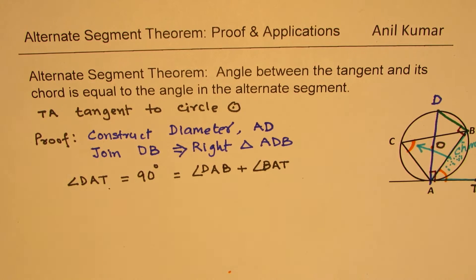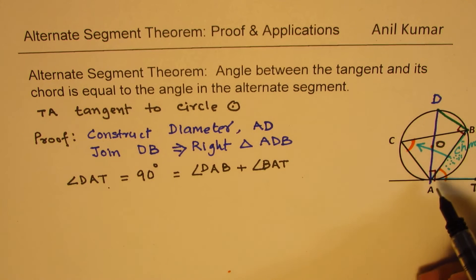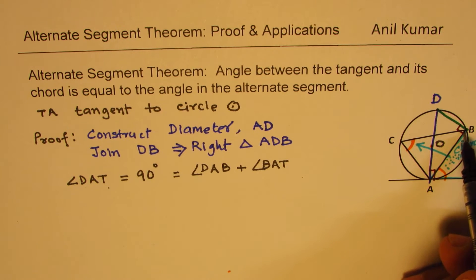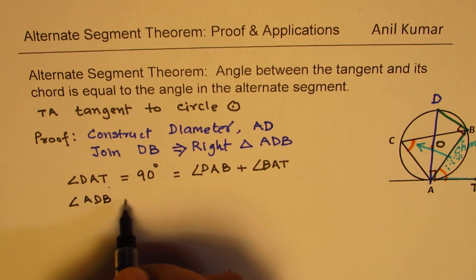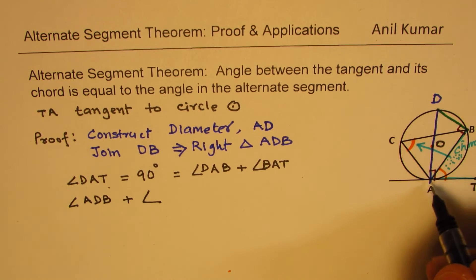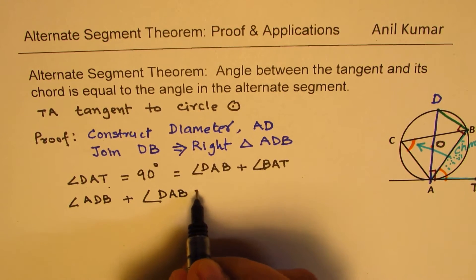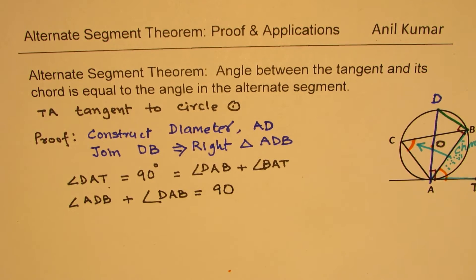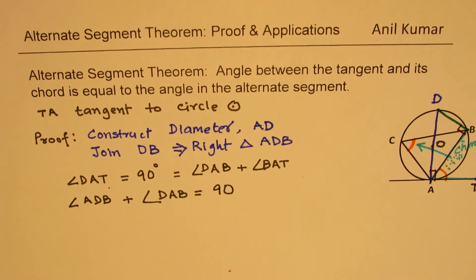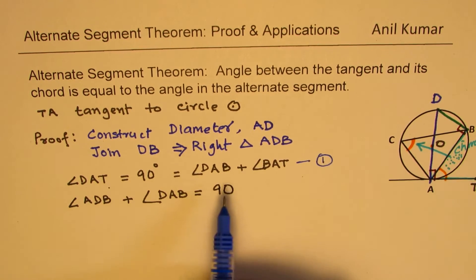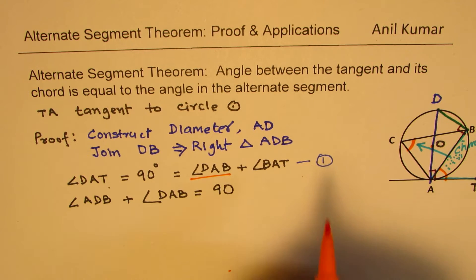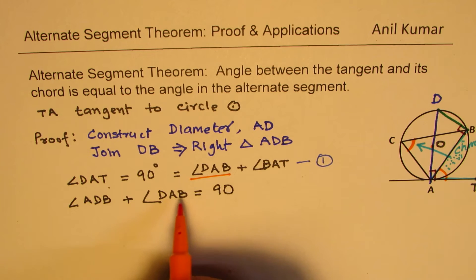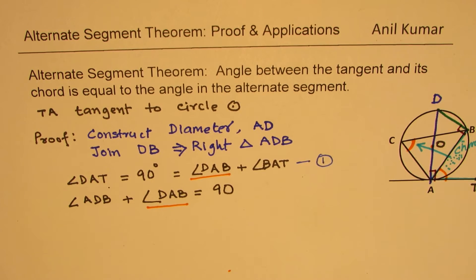That is the angle of our interest. Now if you look into triangle ADB, since angle B is 90 degrees, therefore angle ADB plus angle DAB is also equal to 90 degrees. So the sum of these two angles is also 90.